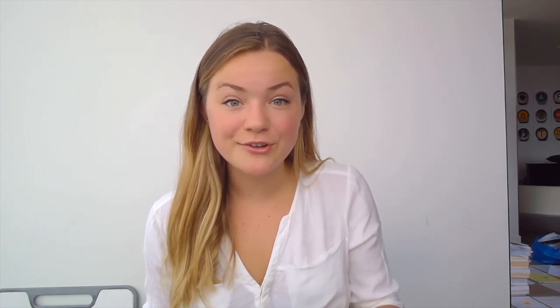For example, they showed that the computer recognized the common glandular epithelial and luminal components of various metastatic lesions, and could use these similar features to group together otherwise unrelated tumors into coherent classes of brain tumors, much like expert pathologists do.